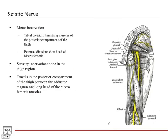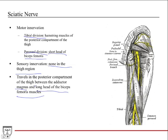The sciatic nerve comes off the sacral plexus, goes into the gluteal region and thigh region, then bifurcates in the knee region. In the thigh it's still one nerve with a tibial division and a peroneal division. The tibial division innervates the hamstring muscles of the posterior compartment. The peroneal division innervates the short head of the biceps femoris — a unique thing about that short head. It travels in the posterior compartment between the adductor magnus and the long head of the biceps femoris.